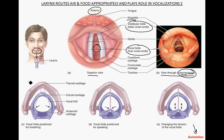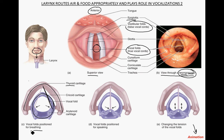The thyroid cartilage is this shield-shaped cartilage on the front — in fact, thyroid means shield. The cricoid cartilage is the ring that goes all the way around, and the vocal cords are suspended between the thyroid cartilage and the cricoid cartilage. The vocal folds are positioned open for breathing. When speaking, muscles contract and pull the vocal folds taut, and changing the tension in the vocal cords produces different sounds and pitches.